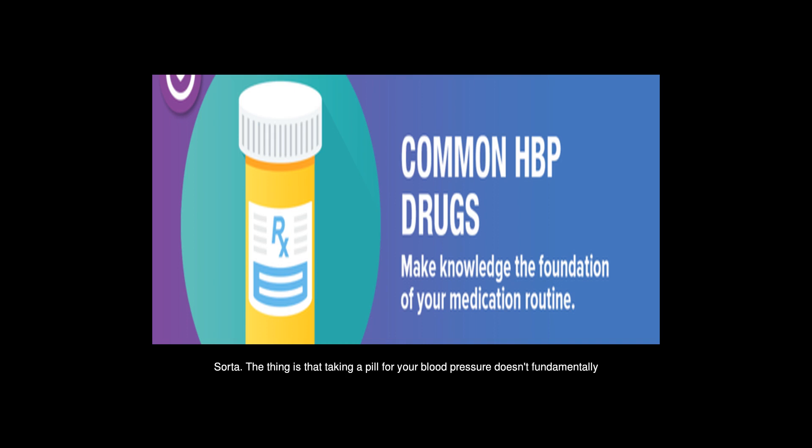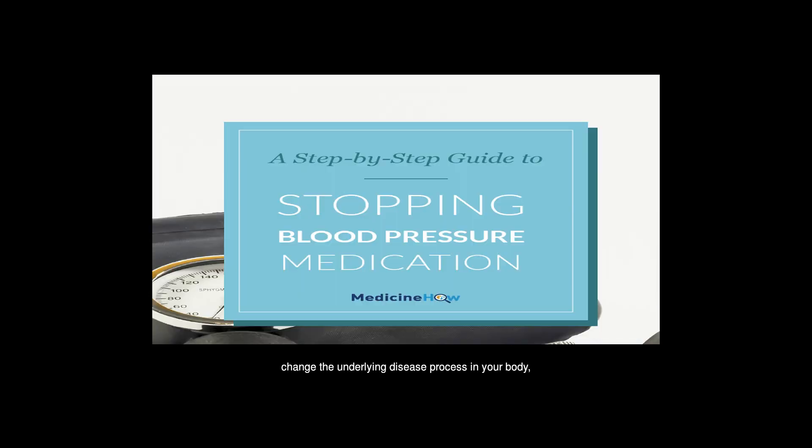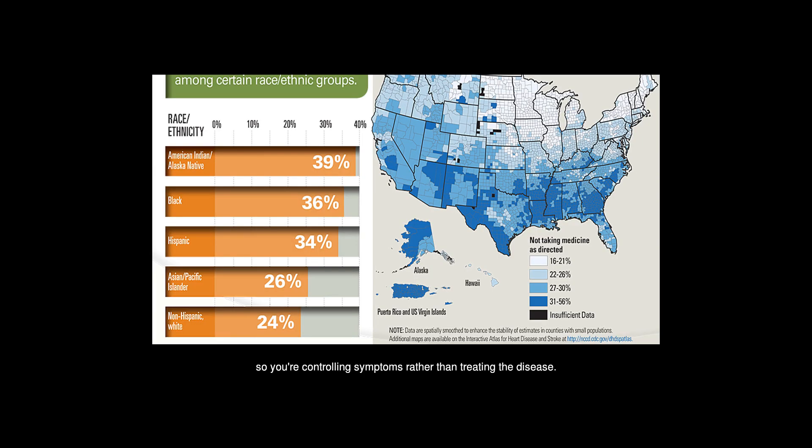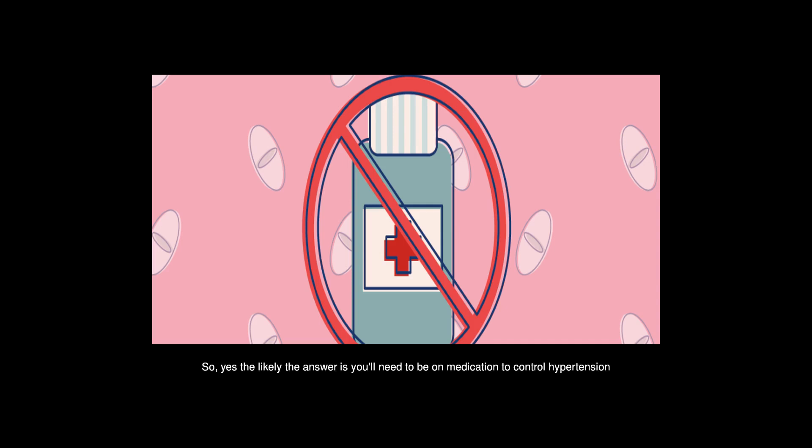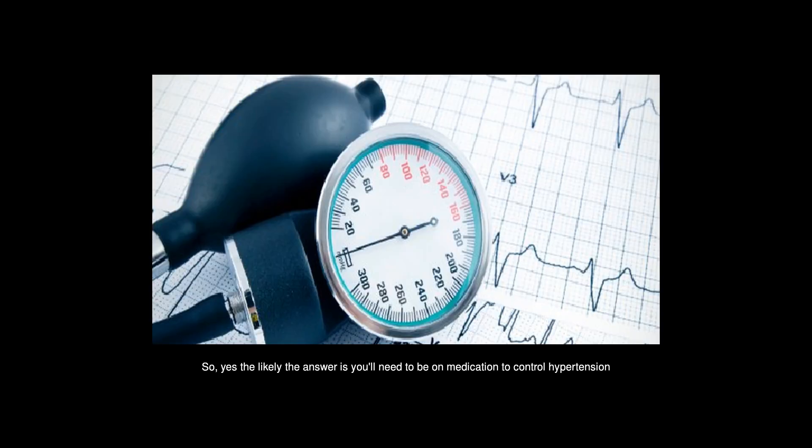Sorta. The thing is that taking a pill for your blood pressure doesn't fundamentally change the underlying disease process in your body, so you're controlling symptoms rather than treating the disease. So yes, the likely answer is you'll need to be on medication to control hypertension indefinitely.